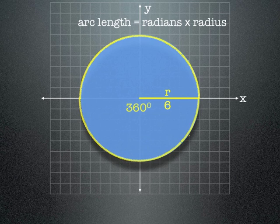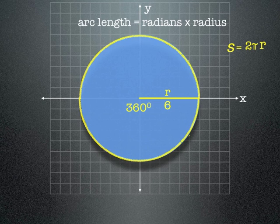So the radius of the whole circle is going to be s, which is the arc length, is equal to 2 pi times r, and remember what this is, that's just the circumference of a circle, that's just the formula for that.